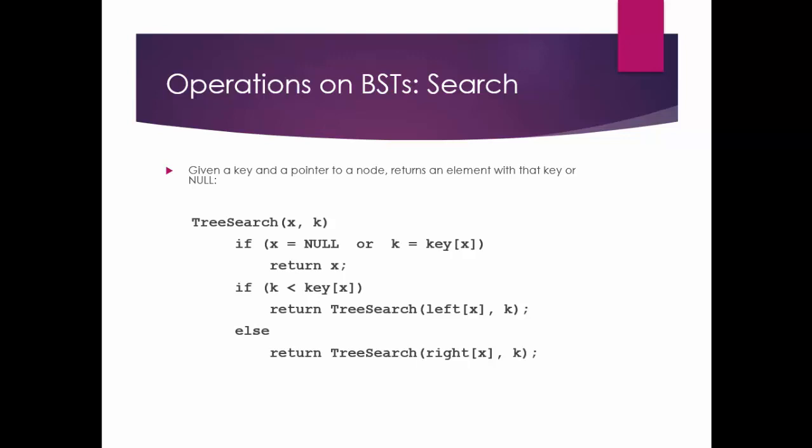If x is equal to null, that means there is no root node — there is no tree. So just return. Or, if k is equal to key of x — where key of x is the root node value and k is the element you want to search — if both are equal, return the value of x, because the element is present at the root node. If k is less than key of x, meaning the value you want to search is less than the root node, then search the left subtree, because whenever a value is less it gets inserted on the left side. If it is greater, it is inserted on the right side. If a value is lesser than the root but greater than the left child, it will come on the left side of the root and then go to the right side of the intermediate node.